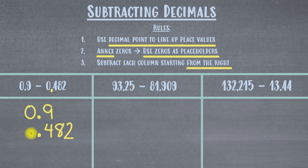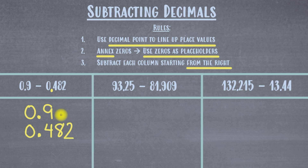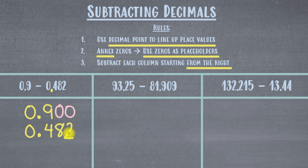I also have a zero to the left of the decimal point. Now that the numbers are set up, I move on to step two: annex zeros as placeholders anywhere you see a blank. So I'll place one zero on top of eight and one zero on top of two. After annexing these zeros, everything is nicely and neatly in columns — that's the whole point of using rule number one, to make sure we use our decimal points to line up each of our place values.